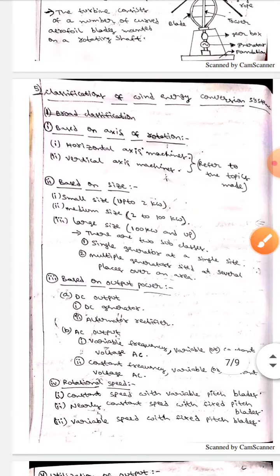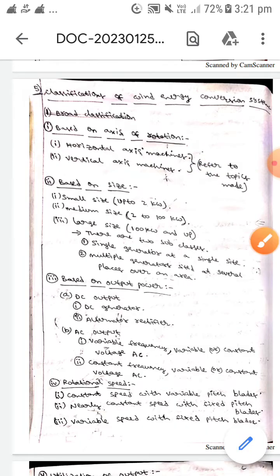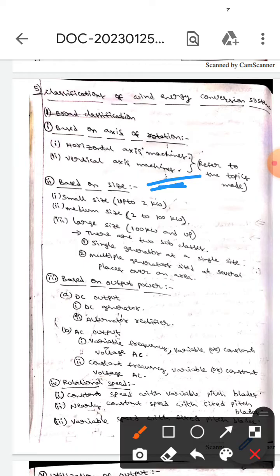One is horizontal axis turbines, whereas the next one is vertical axis turbines. I already talked about these two in other videos, please check my YouTube channel. The next classification is based on size. Small size can produce up to 2 kilowatts.